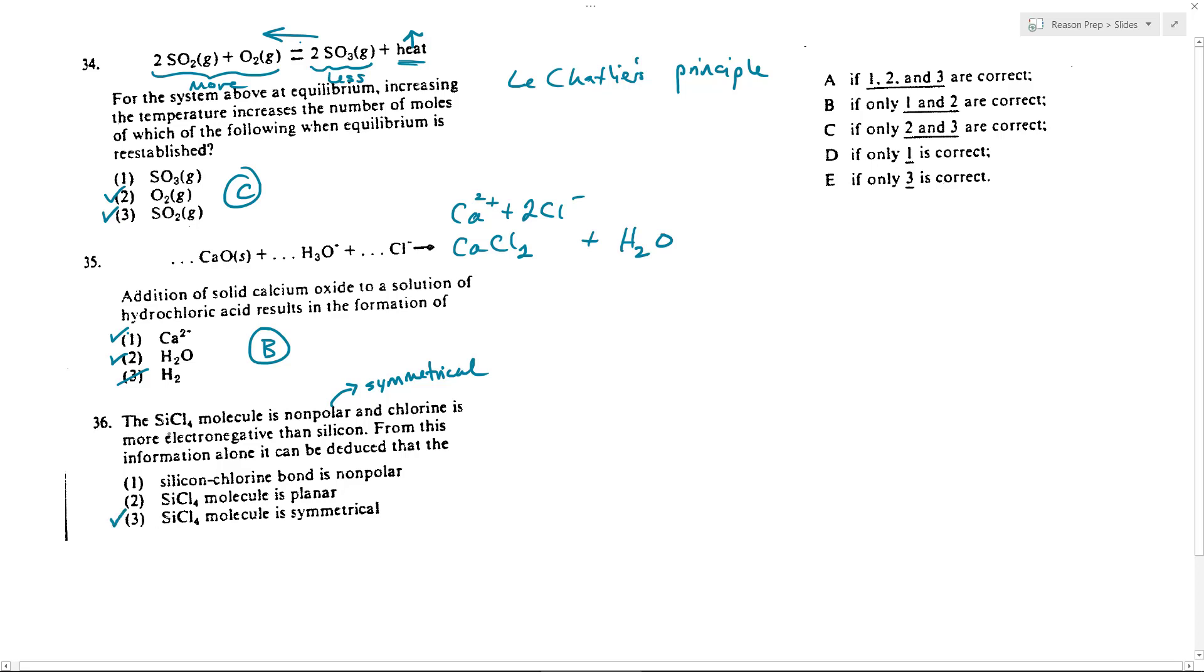We know just from experience that SiCl4 is tetrahedral, so it's not going to be planar. So we can get rid of that.